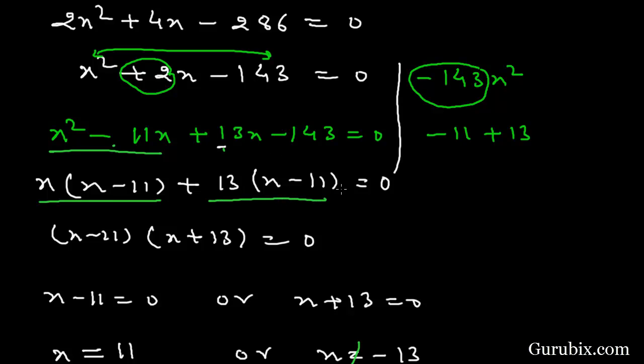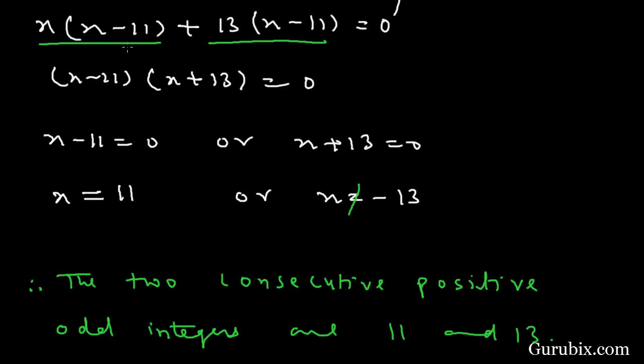If we take 13 common from last two terms then we have positive 13 into x minus 11 equals to 0. And now we have taken x minus 11 common from these two terms, then x minus 11 into x plus 13 is equal to 0.